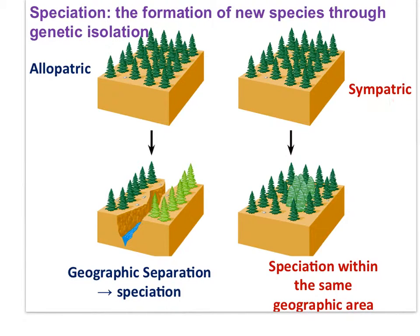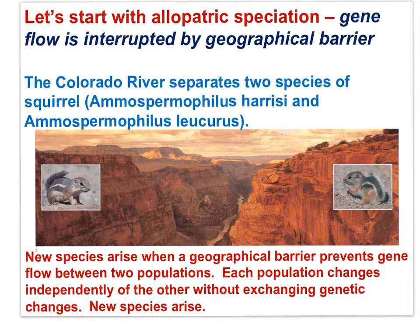On the right, we can see sympatric speciation — speciation in the same geographic area. Maybe a mutation resulted in a group whose cones came to maturity earlier or later than the others in the group, so reproductive isolation occurred and led to new species. Allopatric speciation is when gene flow is interrupted by a geographical barrier.